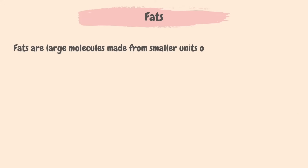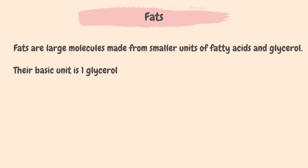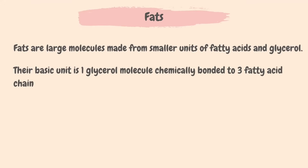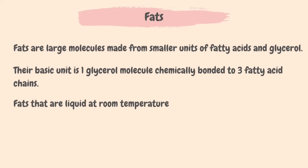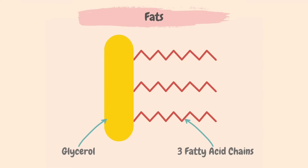The next category of biological molecules are fats, or lipids. Fats are large molecules made from smaller units of fatty acids and glycerol. Their basic unit is one glycerol molecule chemically bonded to three fatty acid chains. Fats that are liquids at room temperature are called oils. Each fat molecule consists of one glycerol molecule bonded to three fatty acid chains.